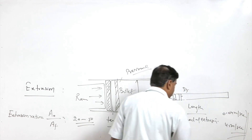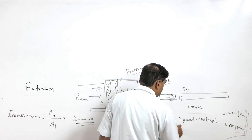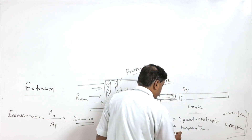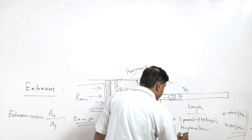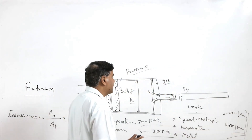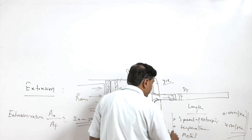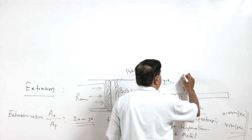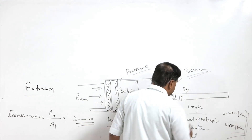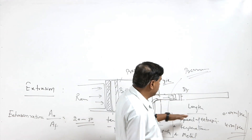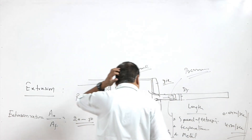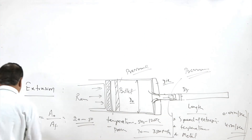Extrusion speed is one factor, the temperature at which extrusion is carried out is another factor, and the metal being worked is the third factor. These three factors affect the extrusion pressure. So, extrusion pressure is governed by extrusion speed, the temperature of the billet, and the metal being worked.